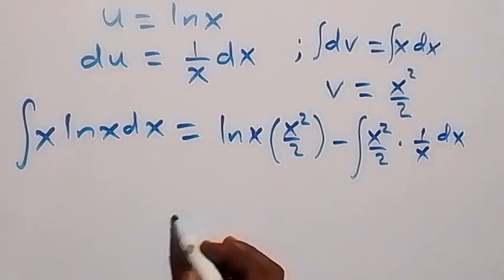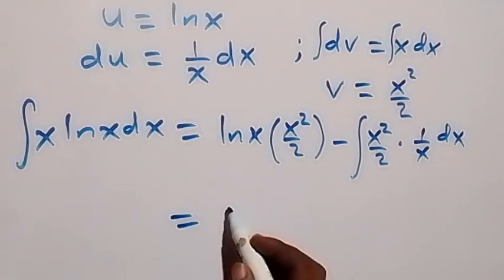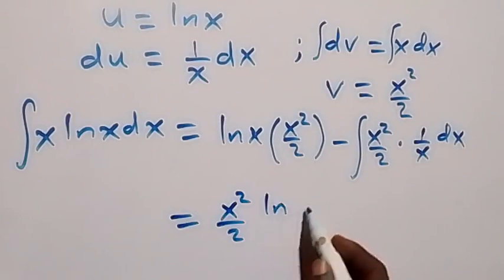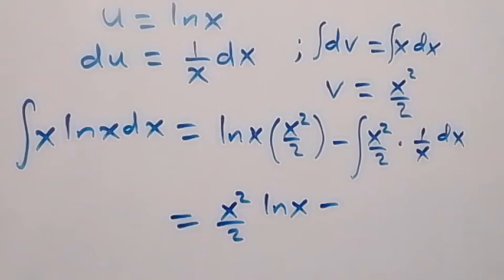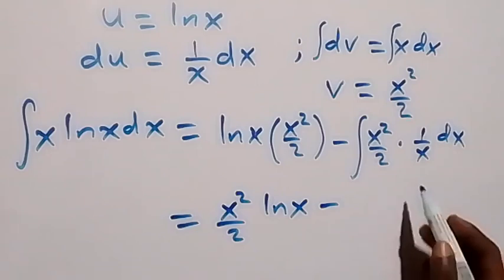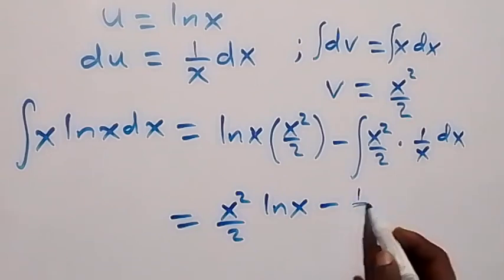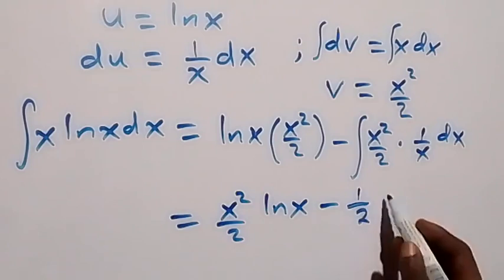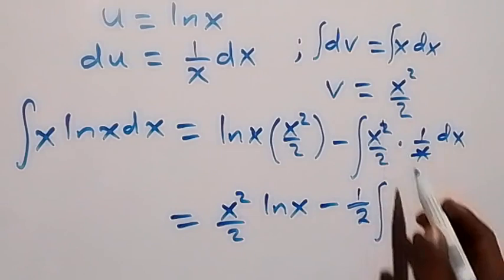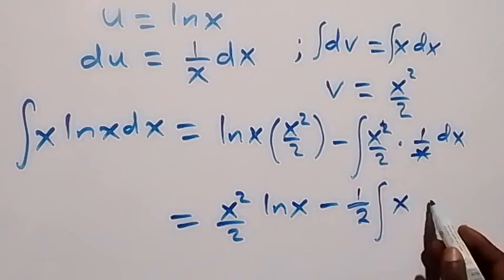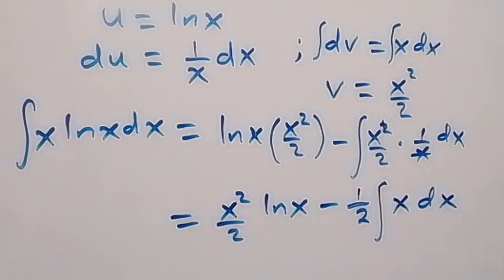Then when we simplify this, this gives us we can write this as x squared over 2 ln x, then minus, here we simplify this. We can take 1 over 2 out as 1 over 2 integral. Here x cancel one of the x here and integral x dx inside here.